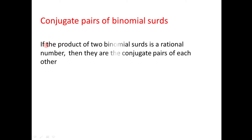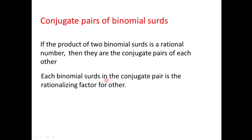Now let us look at the next concept: conjugate pairs of binomial surds. By definition, if the product of two binomial surds is a rational number, then they are conjugate pairs of each other. We also have the property that each binomial surd in the conjugate pair is the rationalizing factor of the other.